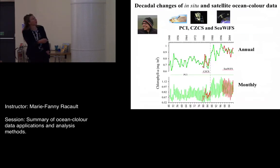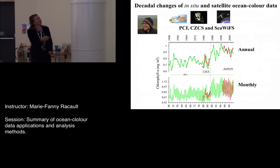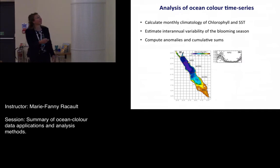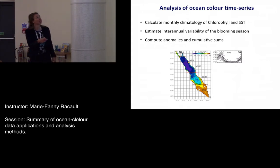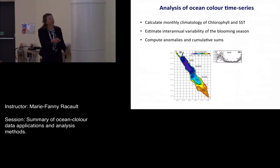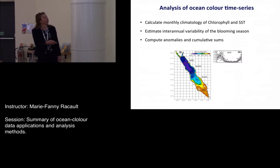Dionysius gave a nice presentation on the use of in situ and satellite ocean color data, covering the phytoplankton color index from the continuous plankton recorder, and how to bridge CZCS and SeaWiFS datasets. Then there was a very hands-on practical where you learned to estimate monthly climatologies for chlorophyll and SST, estimate interannual variability, compute anomalies and cumulative sums — based in the Northern Red Sea.